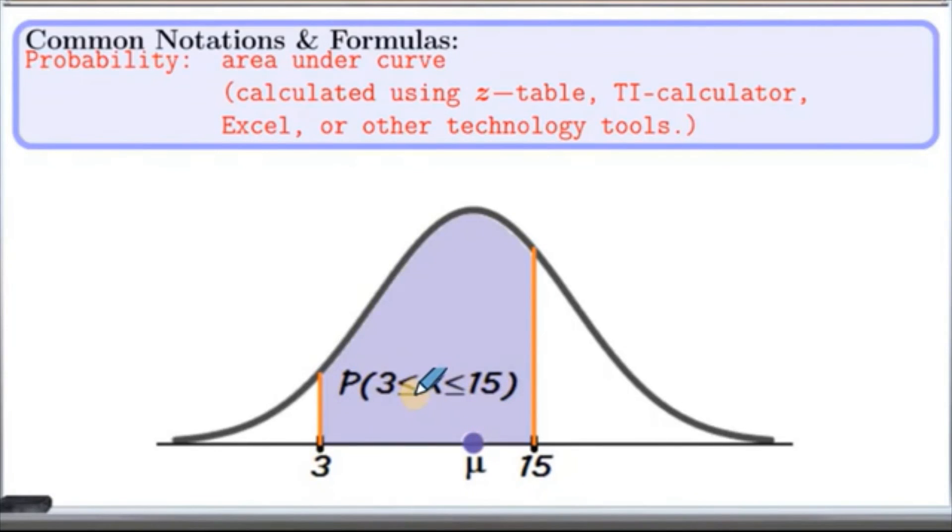For that, what we will do is we will find the probability between 3 and 15, that is the area of the shaded region here, and that will be the probability between 3 and 15.